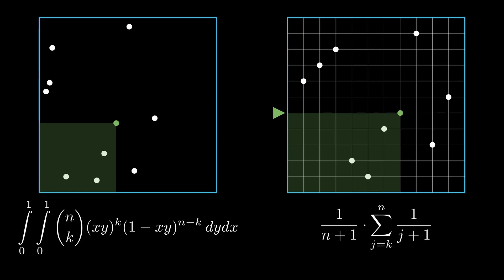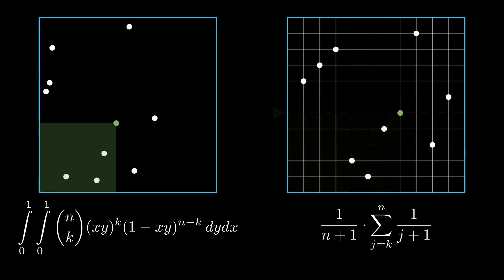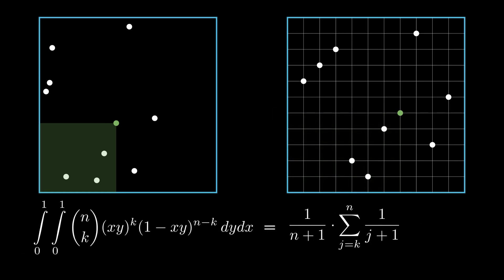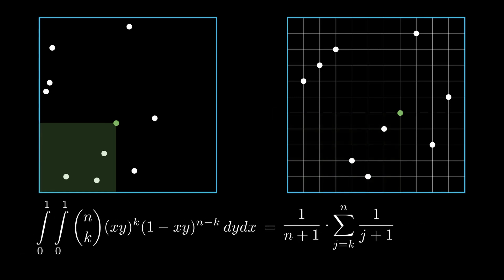Therefore, the probability of having k points is just 1 by j plus 1 for the j plus 1th row. The total probability is then given by the sum 1 by n plus 1 times sigma j equals k to n, 1 by j plus 1. This finally shows that the value of this integral is equal to the sum on the right.